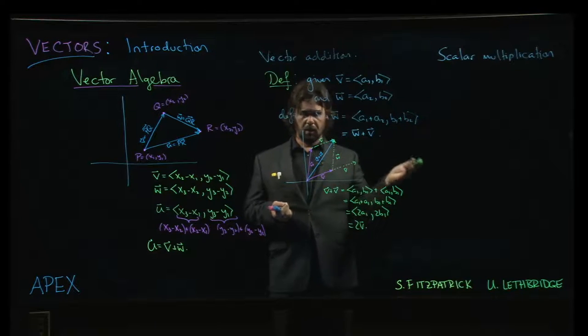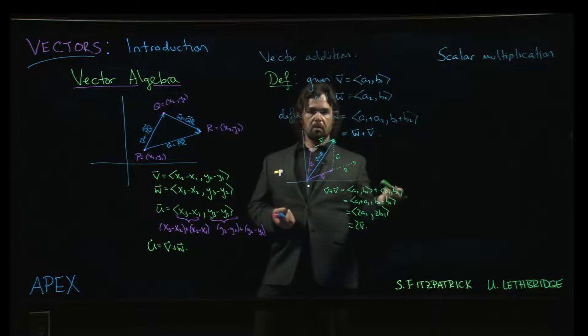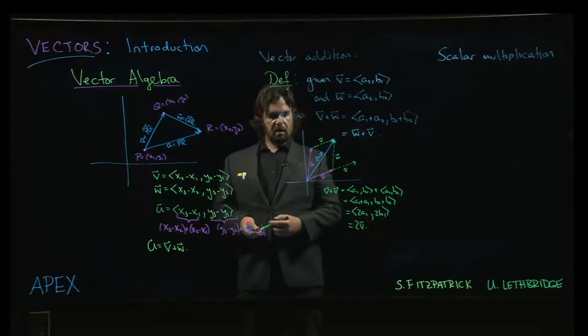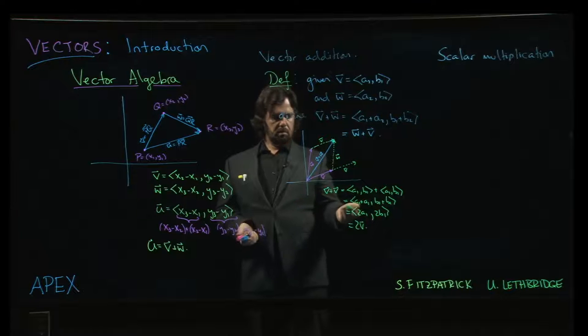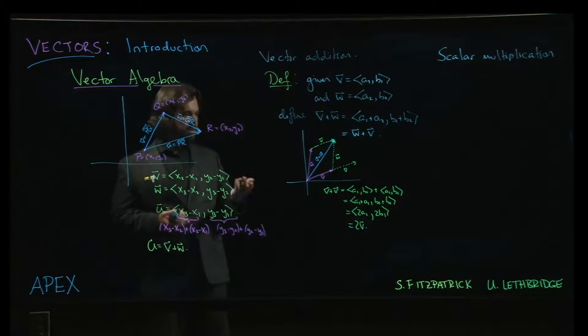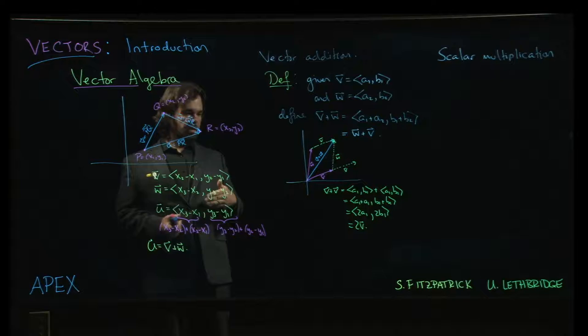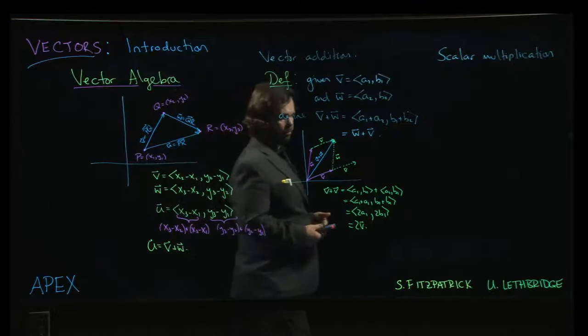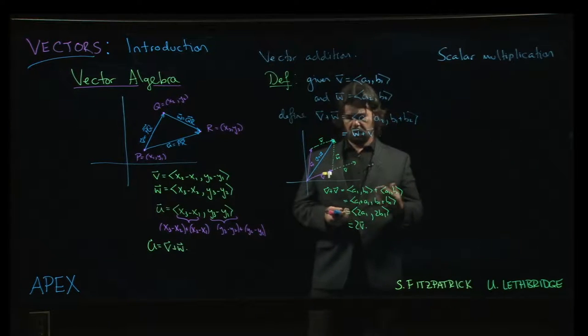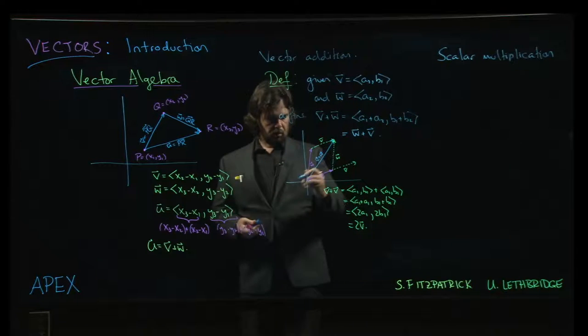Just like a1 plus a1 is 2a1, why not? I could do a third one, that would work too. Then we think, what about negative v? What would minus v be? We want to talk about the scale, the magnitude of the vector. We can change the length without necessarily changing the direction.